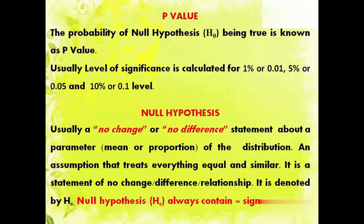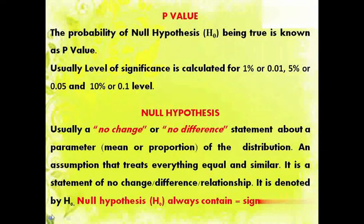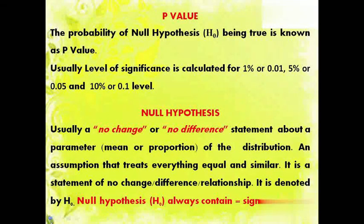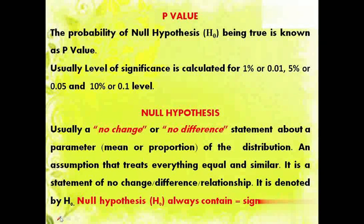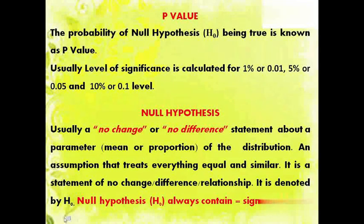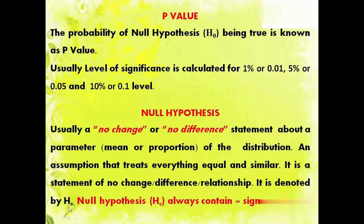Usually the level of significance is calculated for 1% or 0.01, 5% or 0.05, and 10% or 0.10 level. So level of significance ko hum 1%, 5%, aur 10% level par calculate karte hai.